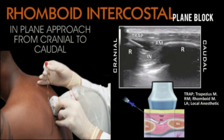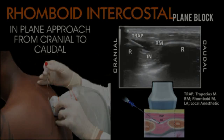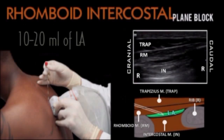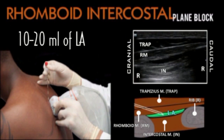Then advance the needle in-plane through the trapezius and rhomboids in a craniocaudal direction. Then inject 10 to 20 ml of local anesthetic in the fascial plane between the rhomboid and the intercostal muscles and ribs.